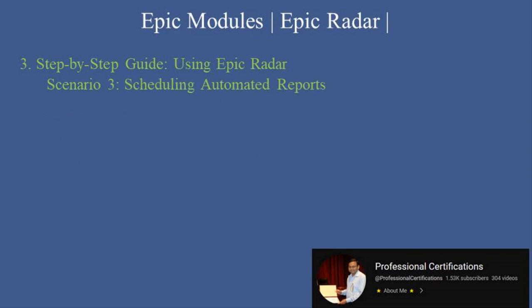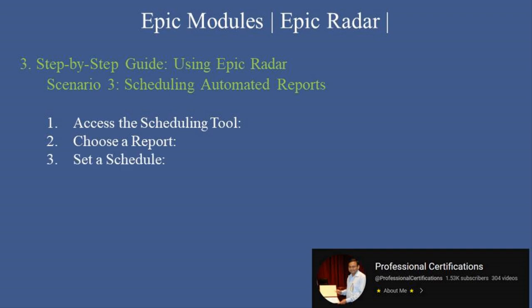Scenario 3: Scheduling automated reports. Step 1 — access the scheduling tool by navigating to the scheduling feature in Epic Radar. Step 2 — choose a report from the library that needs to be distributed regularly. Step 3 — set a schedule by defining the frequency and time for report generation and delivery, for example daily, weekly, or monthly. Step 4 — add recipients by entering the email addresses or Epic usernames of the stakeholders who need the report. Step 5 — save and activate the schedule and confirm that it's active.